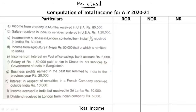Point A: Income from property in Mumbai received in USA, Rs. 80,000. Here, property is in India, so the income is accrued in India. This is taxable in all 3 cases — Rs. 80,000 in case of ROR, NOR, and non-resident.